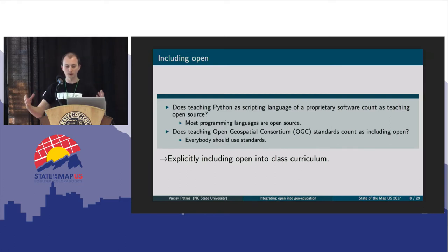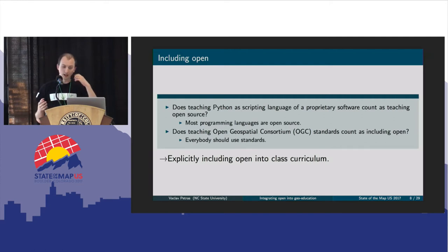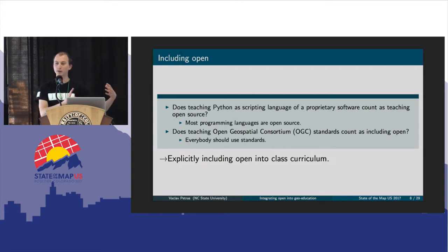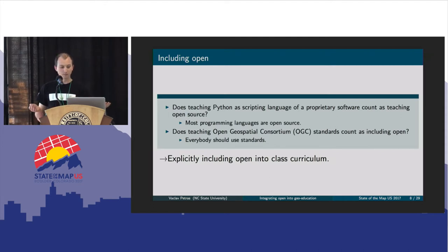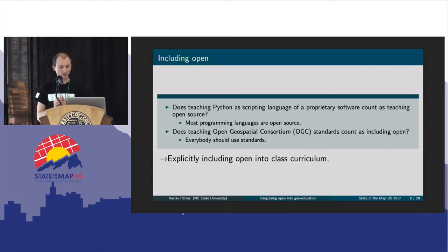With the content of courses or having open in the course, what I have also seen is that we would say we are teaching open because we are teaching something like Python. But Python, while open source, is not specific to our geospatial field — and also most programming languages are open source, so does teaching an open source programming language really count as open source? Maybe, maybe not. Same thing for teaching OGC standards — they have open in their name, but of course they are standards that both proprietary and open source software use.